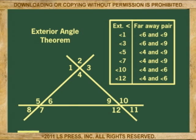For exterior angles 1 and 3, the far away angles are 6 and 9.